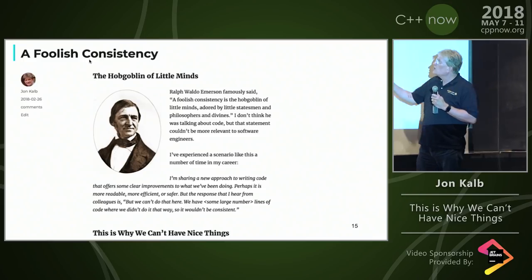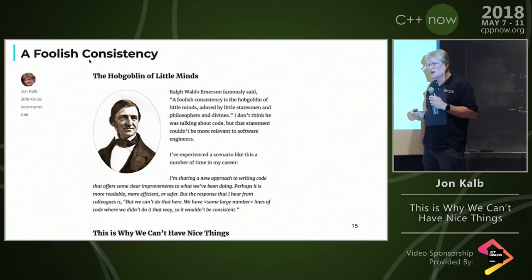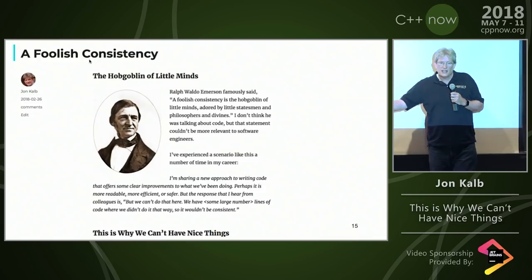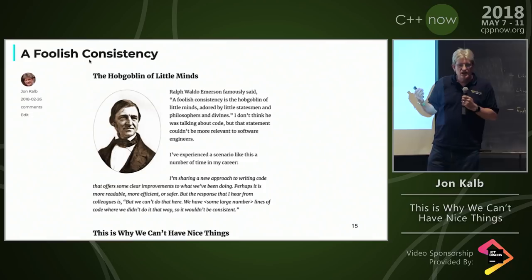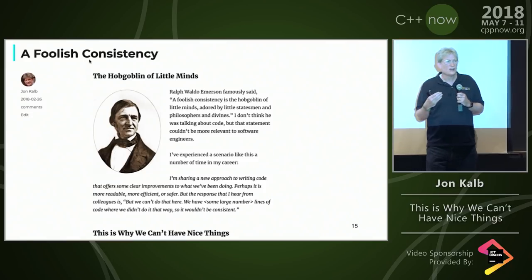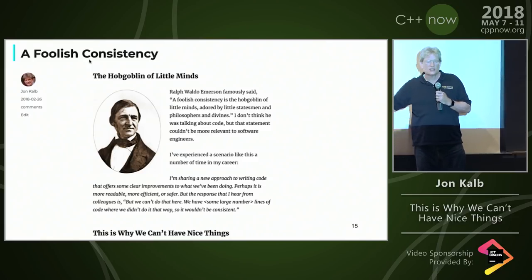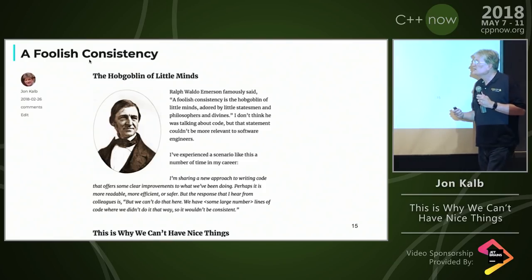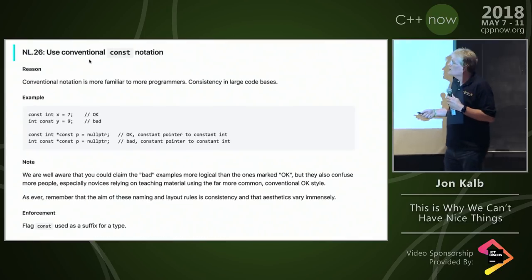So I wrote a blog post about this called A Foolish Consistency, because in my career I've run into this a few times where I've read something or come across some idea about a better way of writing code. And so when I propose this, what happens is the response is always, well, we can't do that. And the reason we can't do that is because we have several million lines of code that don't work that way and we want to be consistent.